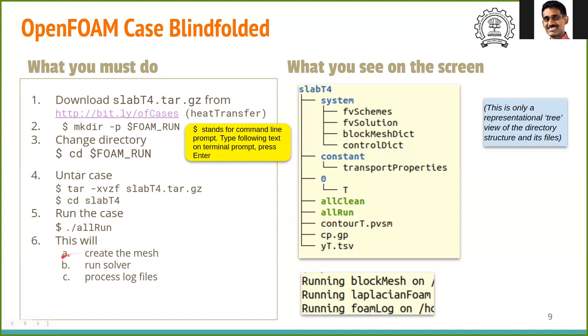This will create the mesh using blockMesh. Part of the output you will see is shown here. Then it will run the solver. Here the solver is called laplacianFoam. Finally, it will process the log files from the solver. This is useful to analyze the output to check if the solution has indeed converged. If you see this message and no other error on your terminal, that means that the run was successful.